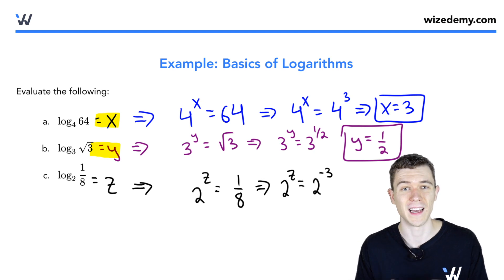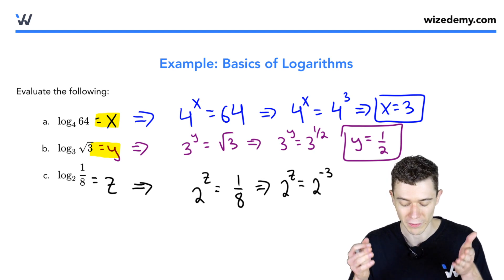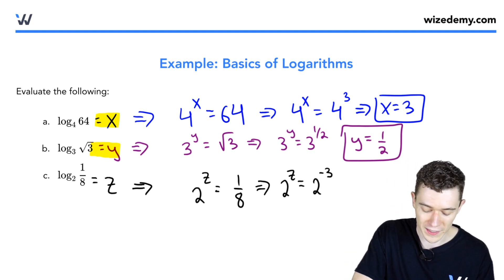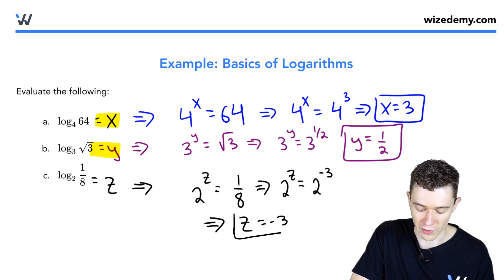The 3 makes it the 8. The negative would make it 1 over 8. If we do this, the bases are once again equal. We can set the exponents equal. Z must be negative 3.